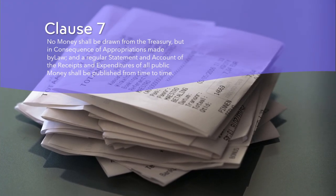Clause 7 is also known as the Appropriations Clause. It states that no money can be spent from the federal treasury unless Congress has authorized it by law, and requires that Congress publish a regular account of all public money received and spent. The purpose of this clause is to ensure that the executive branch does not misuse public funds without proper oversight and accountability. It also gives Congress the power of the purse, meaning it can control the policies and actions of the executive branch by granting or withholding funding.